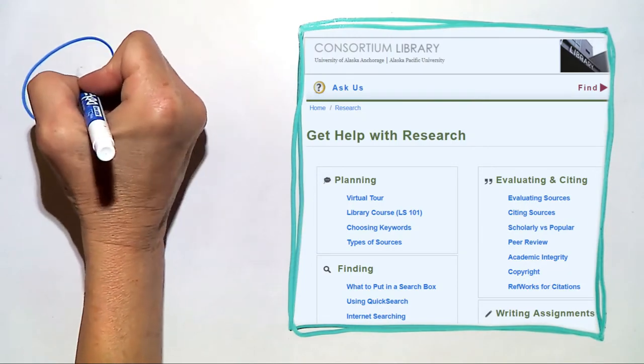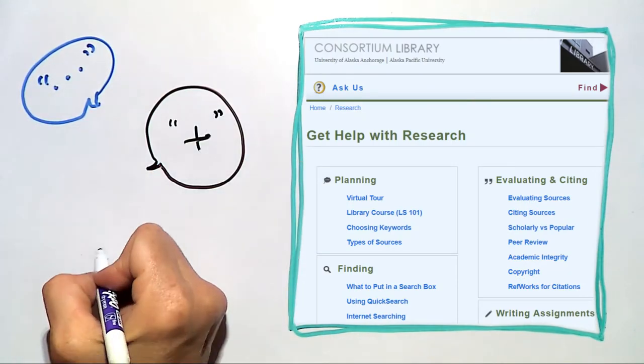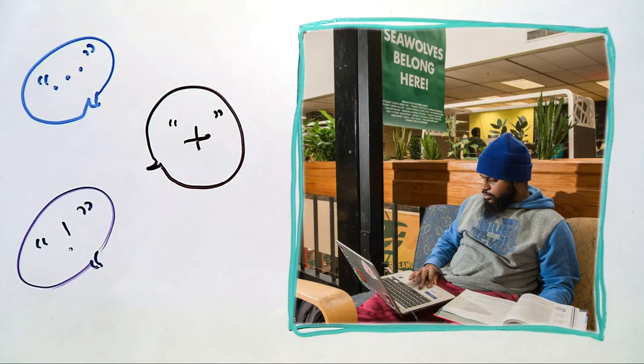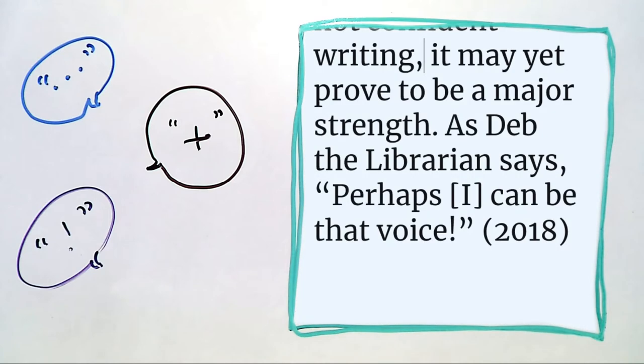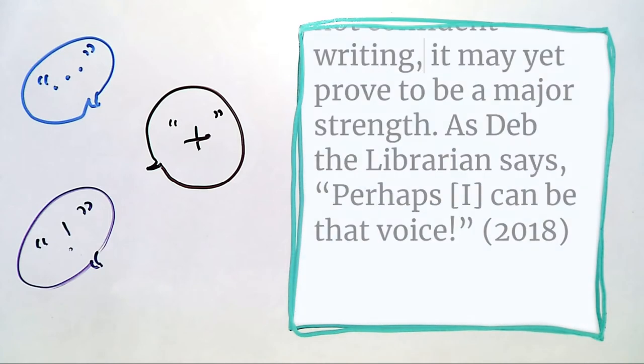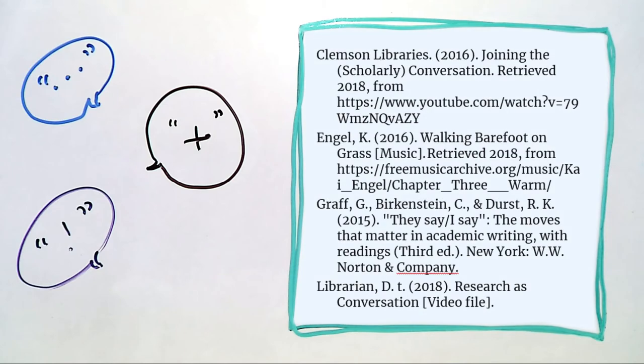As you learn the conversation, keep track of who's saying what, decide which ideas you agree or disagree with, and look for ways to build your own ideas. It's important to represent authors' perspectives fairly and accurately. Give these sources credit when you use their ideas and include them in your bibliography or list of references.